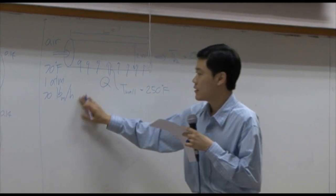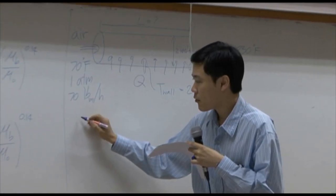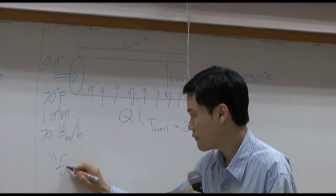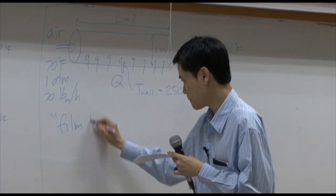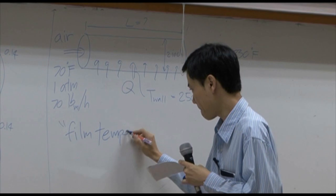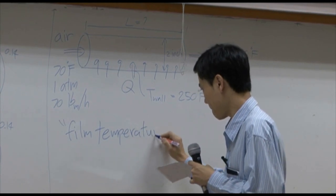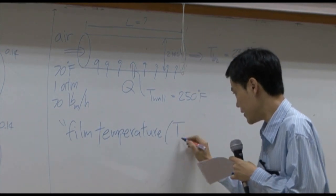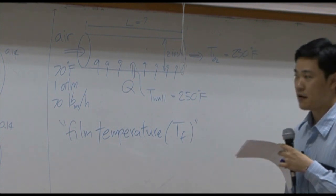In the textbook here, they will make an approximation of what we call film temperature. And it is represented by TF.